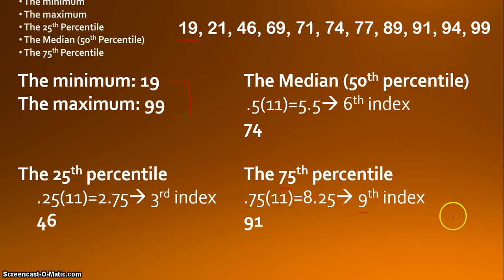And that is our index value. So we find the number in the ninth position in our data set. The ninth number, 1, 2, 3, 4, 5, 6, 7, 8, 9. Number 91. 91 marks the 75th percentile.